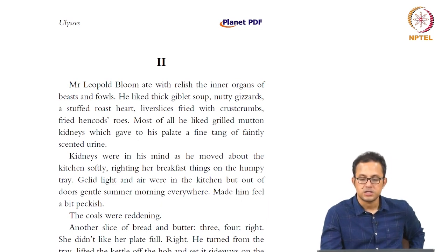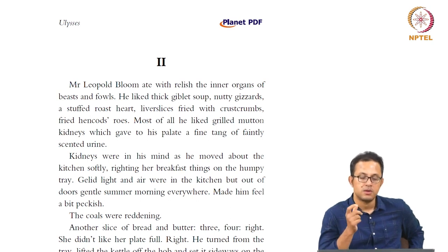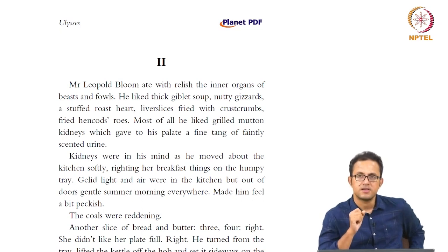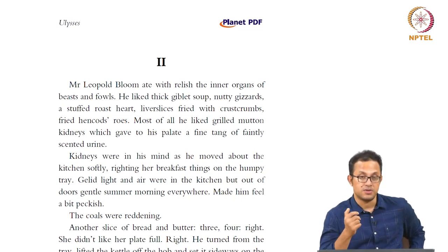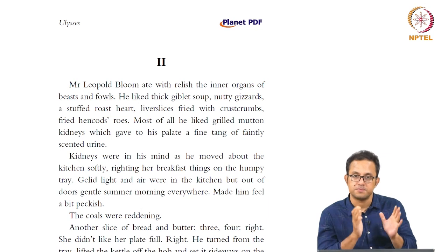He liked thick giblet soup, nutty gizzards, a stuffed roast heart, liver slices fried with crust crumbs, fried hencod's roe. Most of all he liked grilled mutton kidneys, which gave to his palate a fine tang of faintly scented urine. Look at the way excretion, consumption, and different kinds of bodily functions are not just foregrounded — they are almost celebrated, described in such graphic visceral details meant to shock and also move you, sometimes in repulsion, sometimes in disgust. Joyce is very close to one of his Irish literary ancestors, Jonathan Swift. Even in Gulliver's Travels, Swift is a master satirist whose satire relied on bodily functions. The shock Swift created was produced through visceral corporeal functions, and the corporeality in Ulysses is very much part of its realism.